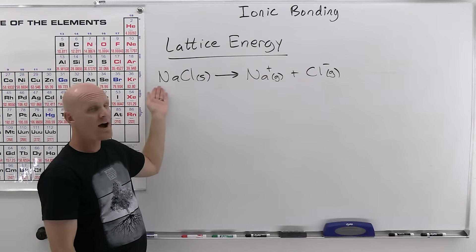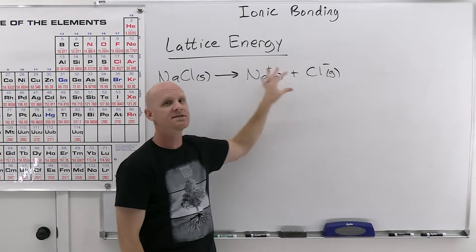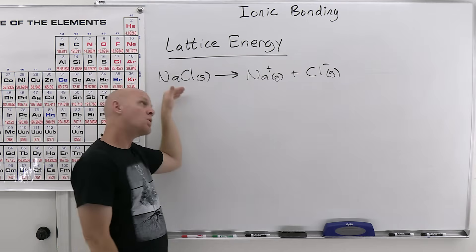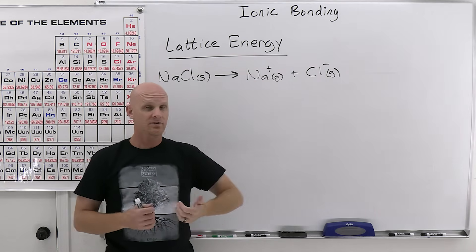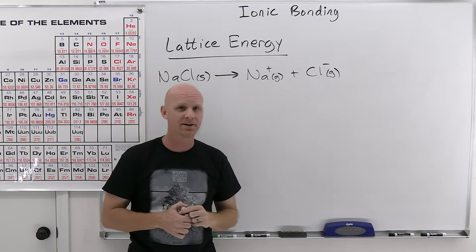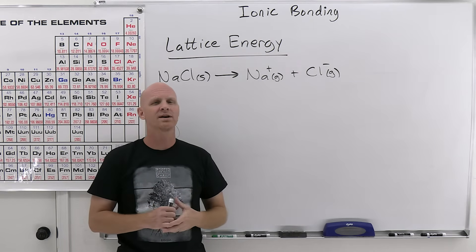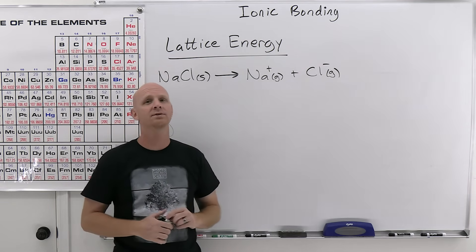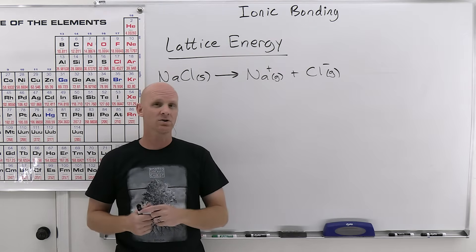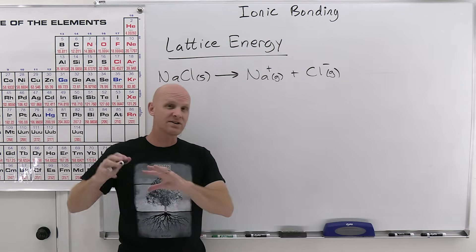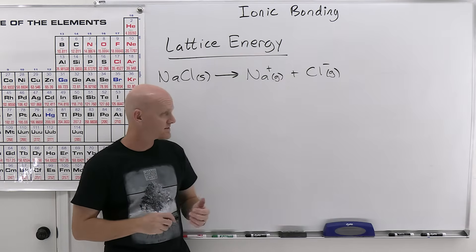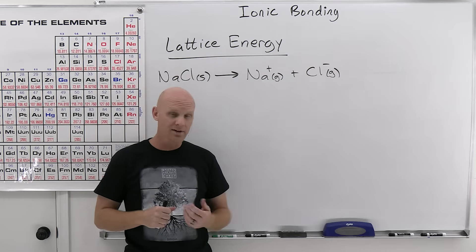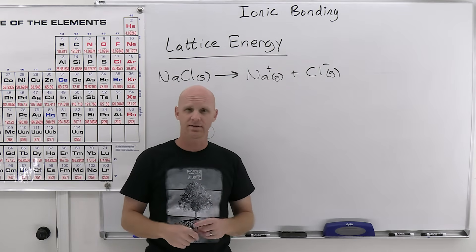Here the ions are bonded together in a solid; after the reaction they've been pulled apart into separate gaseous ions. The stronger the ionic bond holding them together, the more endothermic this reaction is going to be, so lattice energies are typically very highly endothermic. They're also difficult to measure directly in the laboratory — we use a very indirect method called the Born-Haber cycle, which will be covered in the next lesson.